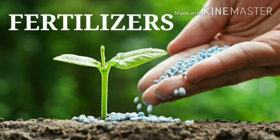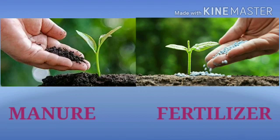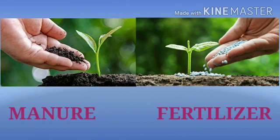To make the soil rich in nutrients, we add manure and fertilizers to the soil. Manure is an organic substance made from plant and animal waste in the fields, whereas fertilizer is an inorganic substance made from chemicals in a factory. Manure contains humus, whereas fertilizer does not. Excessive use of manure improves the water-retaining capacity of the soil, whereas excessive use of fertilizer causes water and soil pollution.